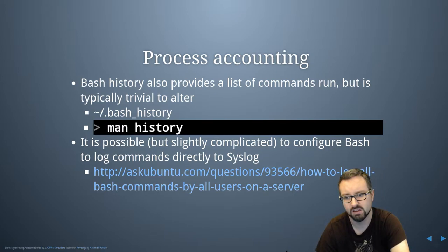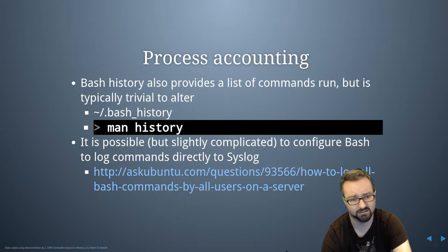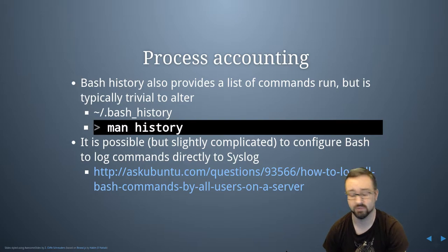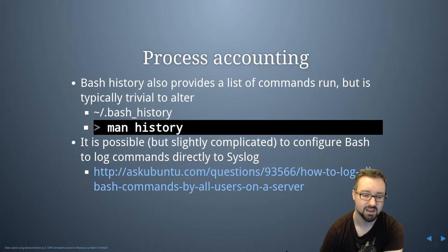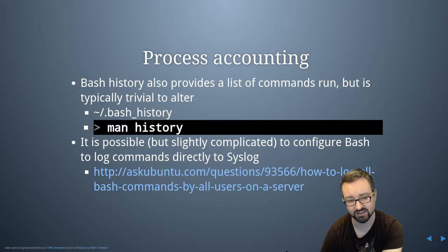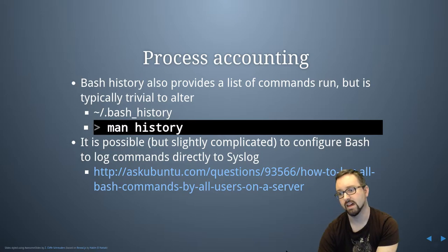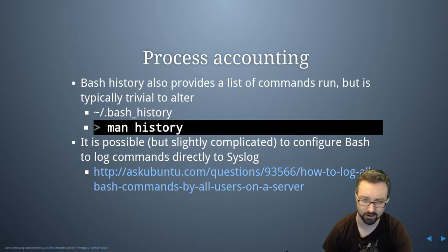Bash history is trivial to alter because it's just a file that lists all the commands. You can also use the history command — if you just type 'history' it'll tell you a list of what's in the bash history, and you can also use that command to clear the history. An attacker will typically not leave that information lying around, but it's useful to know it's there because you can see a list of commands that have been run if it hasn't been edited. It is possible, though slightly complicated, to get bash to actually log into syslog.